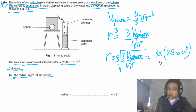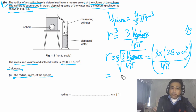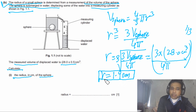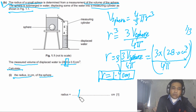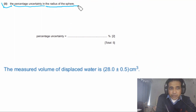Plugging in the value — volume is 28.0 cm³, divided by 4π, raised to the power of 1/3 — we get r = 1.9 cm. The answer is given to 1 decimal place because the data is also precise to 1 d.p. So the final answer is 1.9 cm.